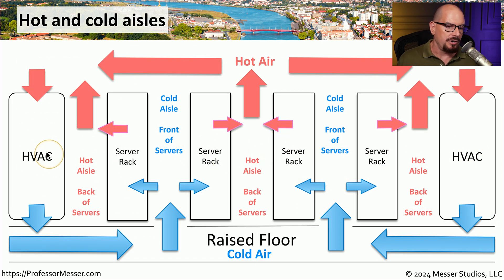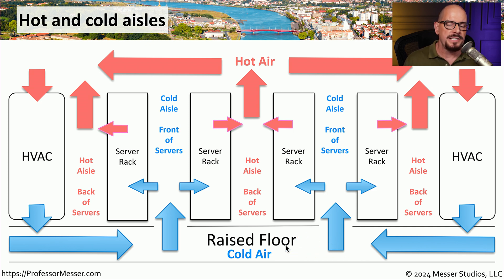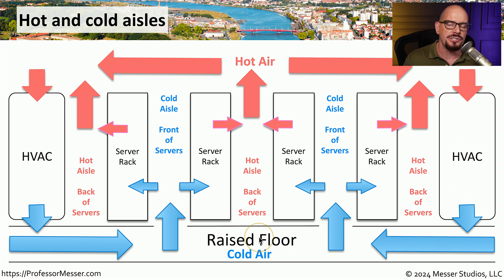Here's a cross section of a data center. On the left and right sides we have our HVAC system, and in this particular environment the cold air is going under the floor and the hot air is being pulled out of the ceiling. The cycle starts with the HVAC creating the cold air, which goes underneath the floor in this raised floor environment. There are vents and holes in the floor that allow the cold air to flow into a cold aisle — this is often the front of the servers, and the servers are pulling in that cold air to cool the inside of the server. Once that air is heated up, it's sent out the back of the server into a hot aisle, and that hot air rises into the ceiling where it's pulled back into the HVAC, recooled, and the entire system repeats.